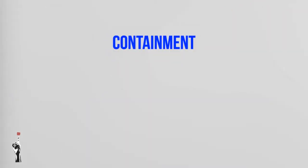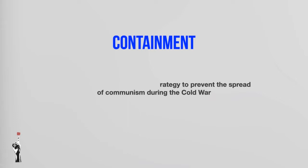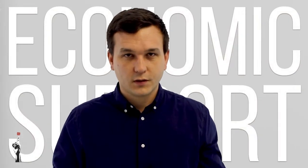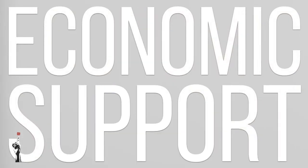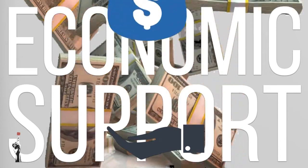They followed a policy of containment. Containment was the United States' diplomatic strategy to prevent the spread of communism during the Cold War. This strategy remained the central strategy for America throughout the whole Cold War, and they achieved it mainly through economic support. Imagine somebody supporting you financially — you are likely to support that person back, and that's more or less how it worked in this case.